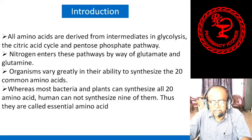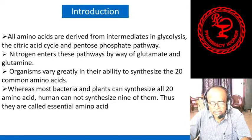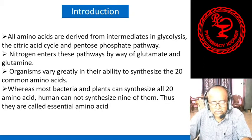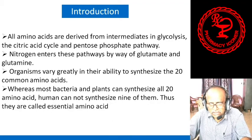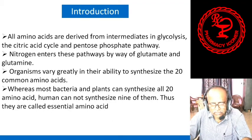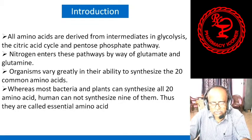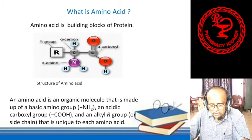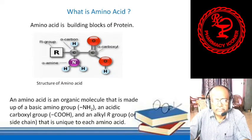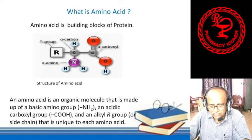Nitrogen enters these pathways by way of glutamate and glutamine. Many organisms vary greatly in their ability to synthesize the 20 common amino acids. Whereas most bacteria and plants can synthesize all 20 amino acids, human beings cannot synthesize nine of them. These nine are called essential amino acids and must be supplied by the diet.